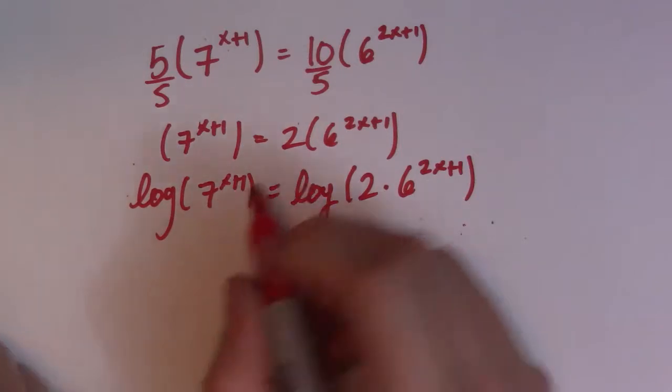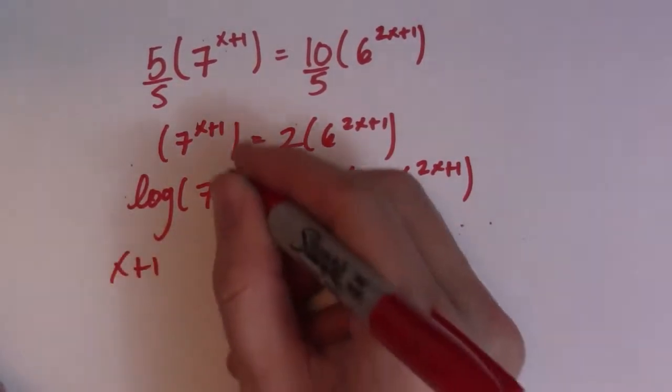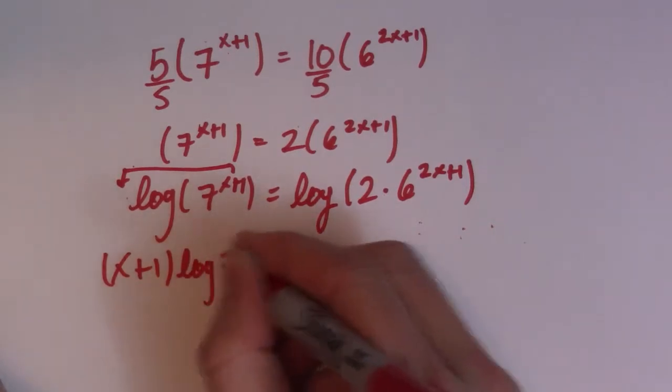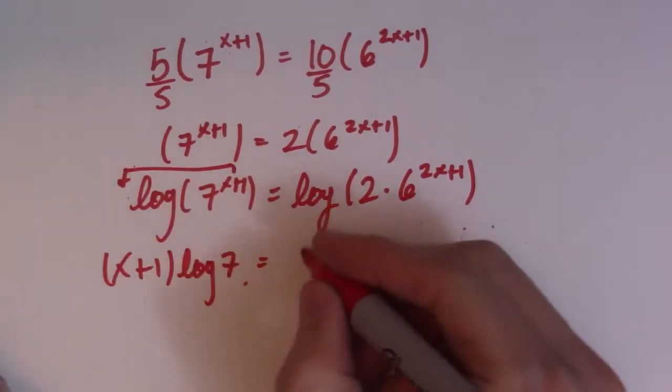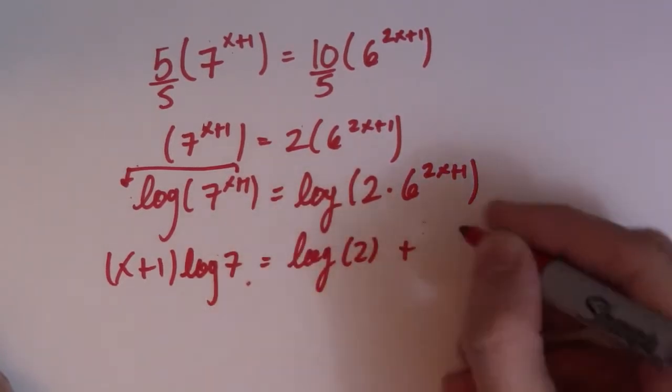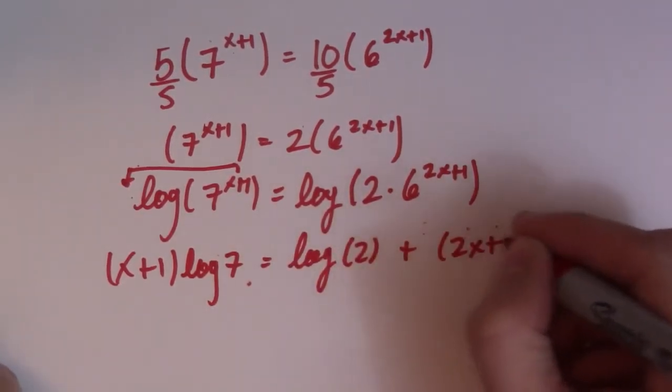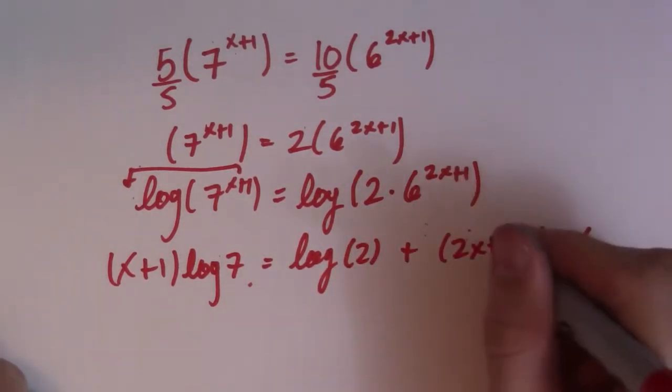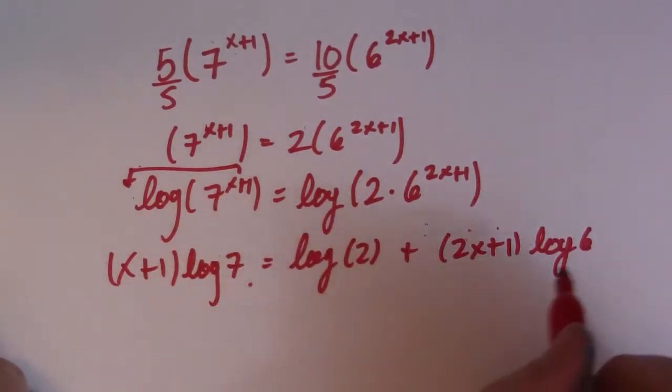Now I take my exponent outside. So the same thing as before. This guy can plop over the front here. Log of 7. So eventually we'll distribute through this one. This one becomes log of 2 plus. Then I have 2x plus 1. Log of 6. So 2x plus 1 comes out front just like I did here. And then log of 6.